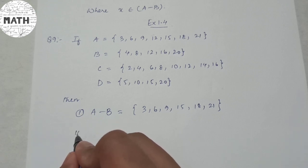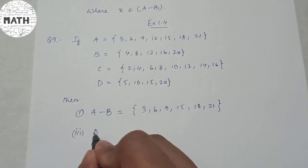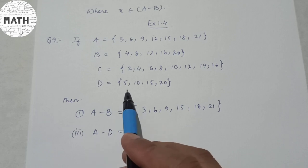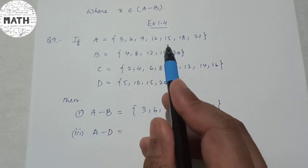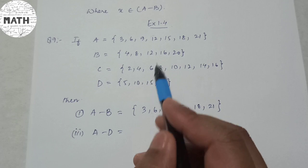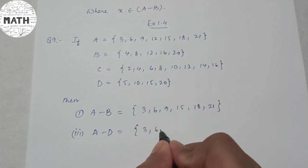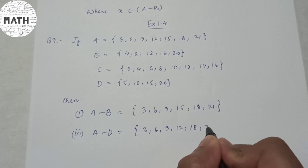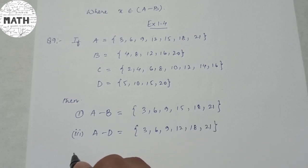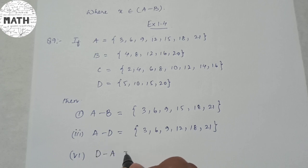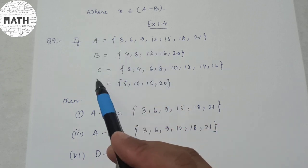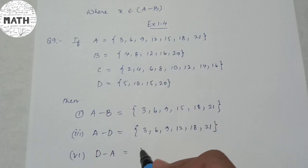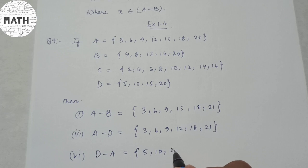For number 3, A minus D: remove elements of D from A. The only common element between A and D is 15, so removing 15 gives {3, 6, 9, 12, 18, 21}. For number 6, D minus A: remove elements of A from D. The common term is again 15, so removing 15 from D = {5, 10, 15, 20} gives {5, 10, 20}.